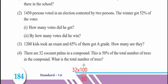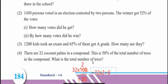If you have zeros, you can cancel them. So 10 is equal to 5. Therefore 32 into 2 is equal to 64. The total number of trees is 64.